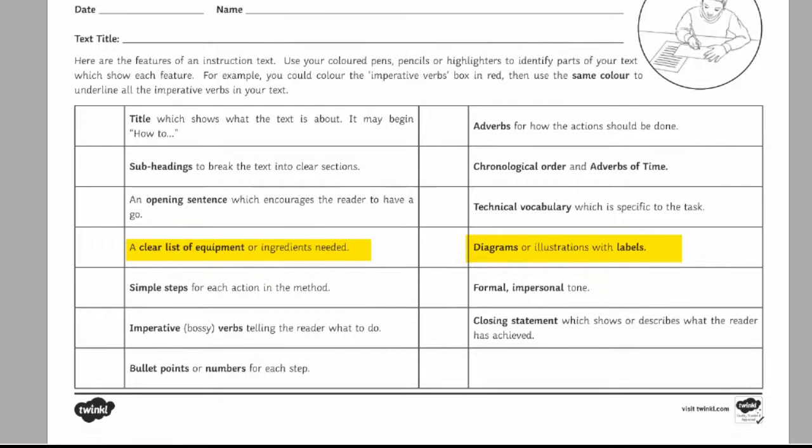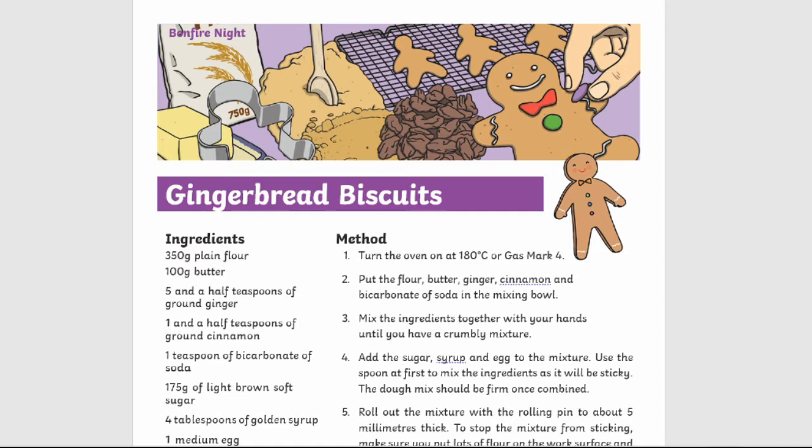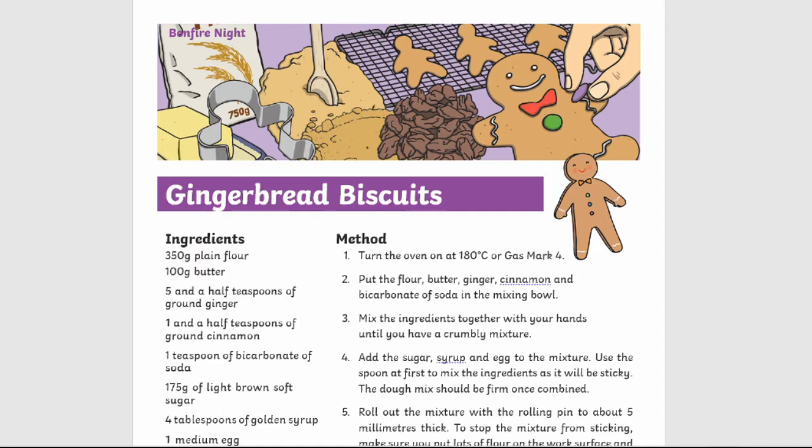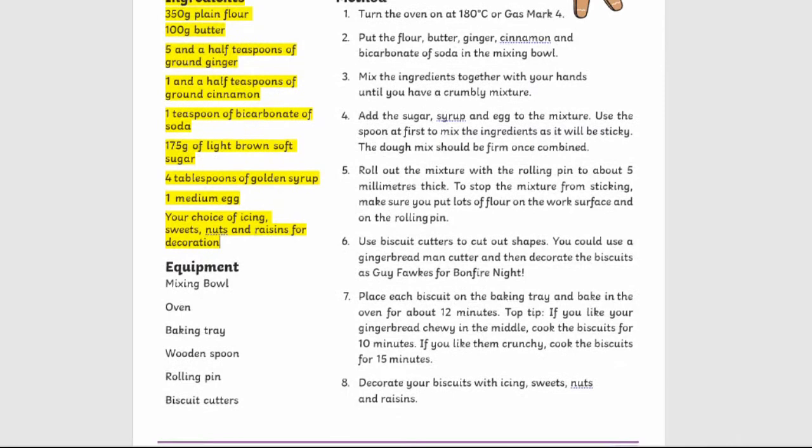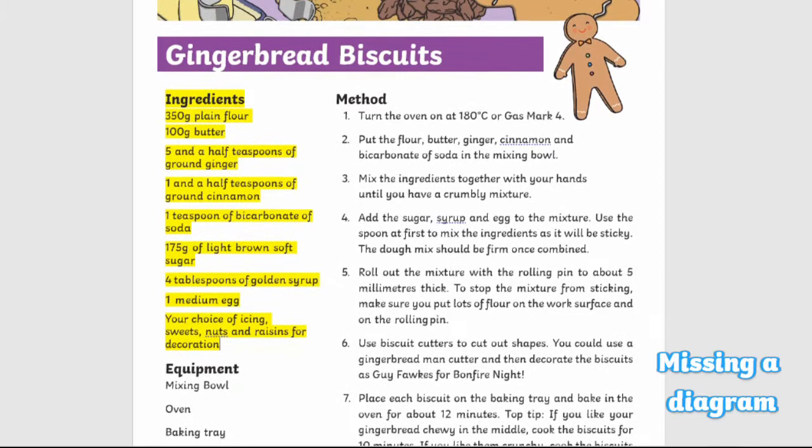Once they've done this they may make some notes, pass it on and receive a new one. For example, say I was in charge of diagrams and a list of equipment or ingredients and we were looking at recipes. I would look at this recipe here and I could say yes, they have included ingredients, so I'd tick the ingredients and write a comment on them. My next criteria is a diagram but I can't seem to see one here, so I may make a note down the bottom to say that it's missing a diagram.